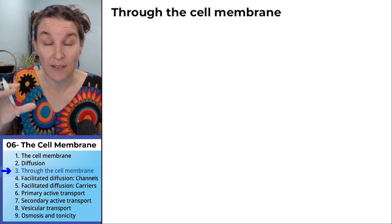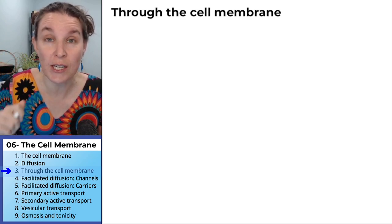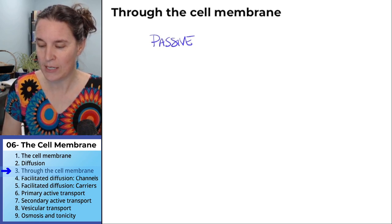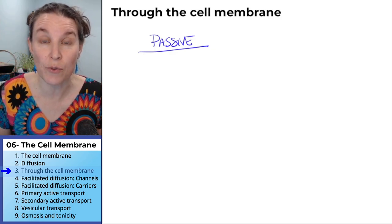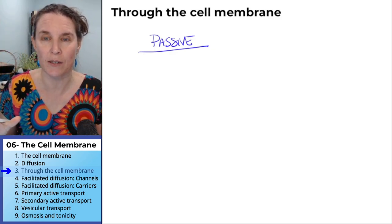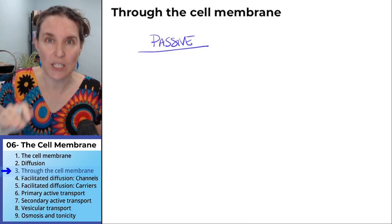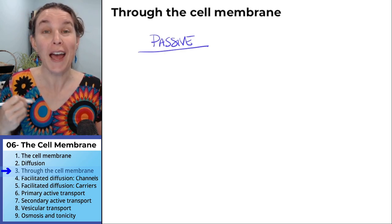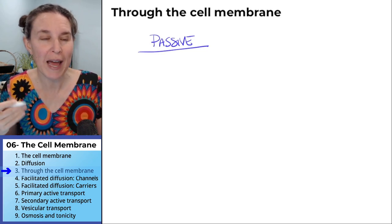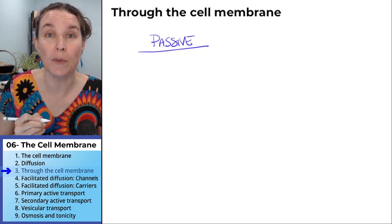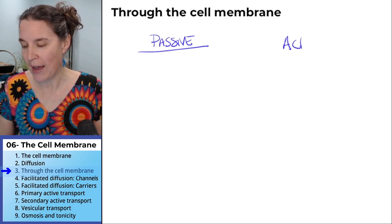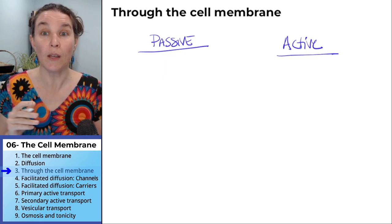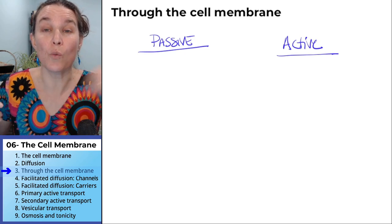All strategies that do not require extra energy input are passive strategies. I'm going to summarize all the ways that we get through the cell membrane in this little visual here, and then we're going to go into each specific example. If we have a passive set of ways of getting through the cell membrane, we also have active strategies. Everything will fall into one of those categories.